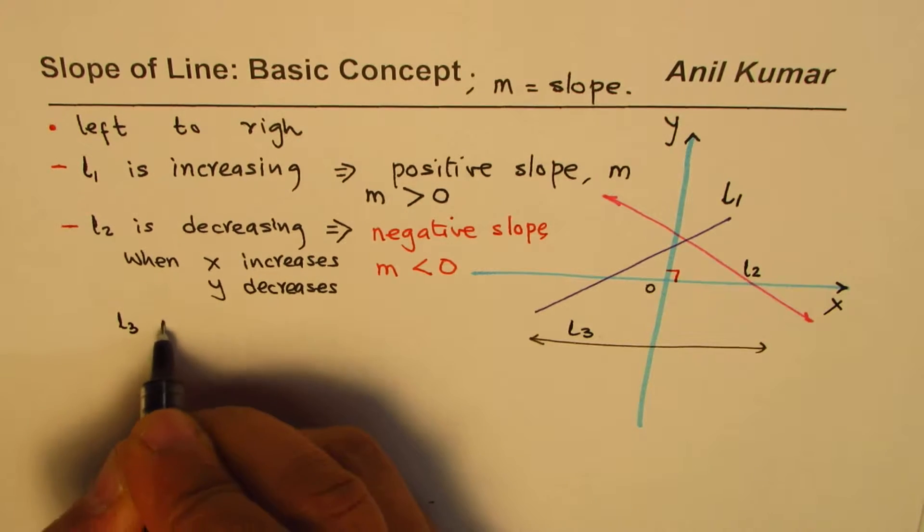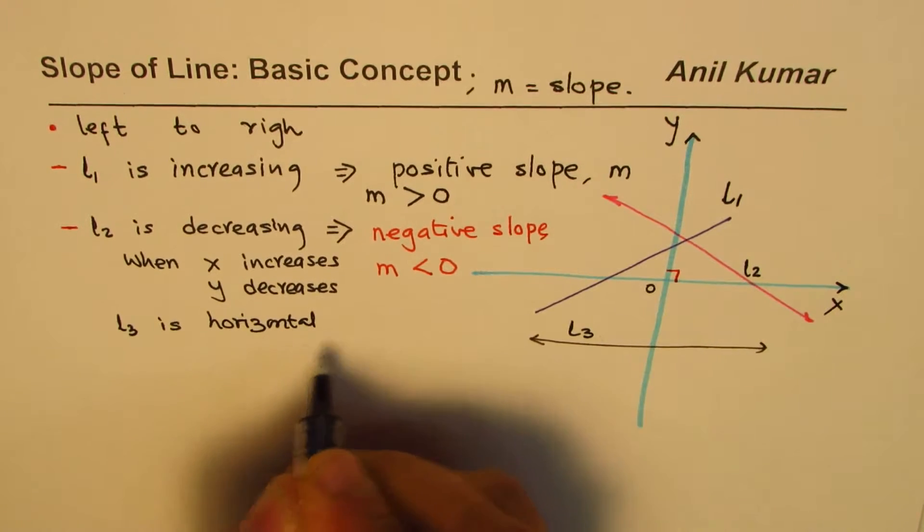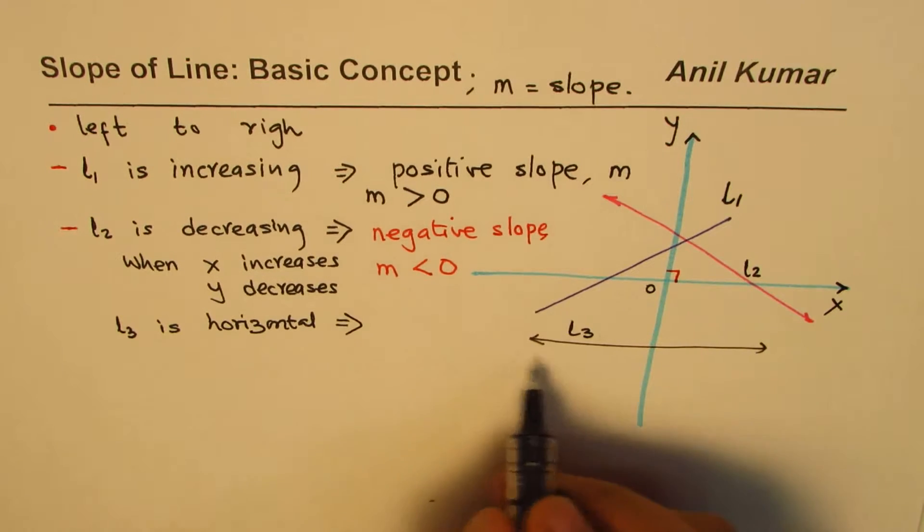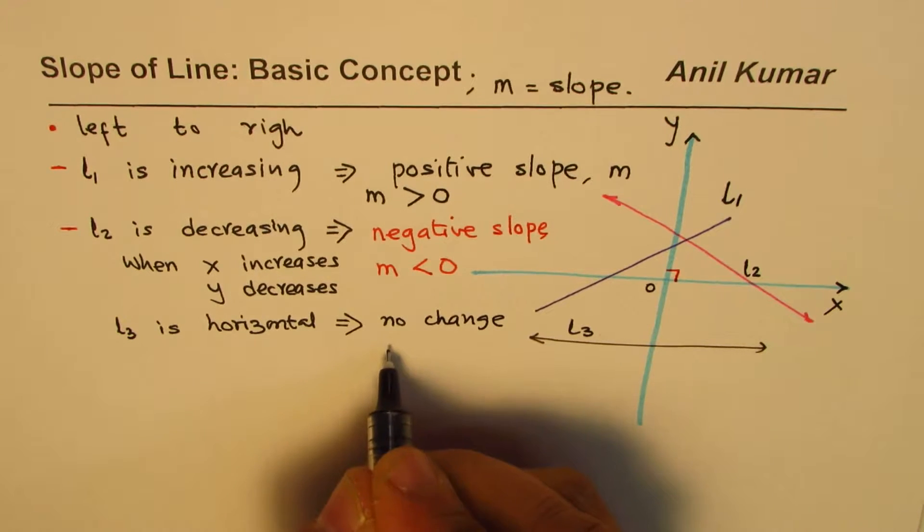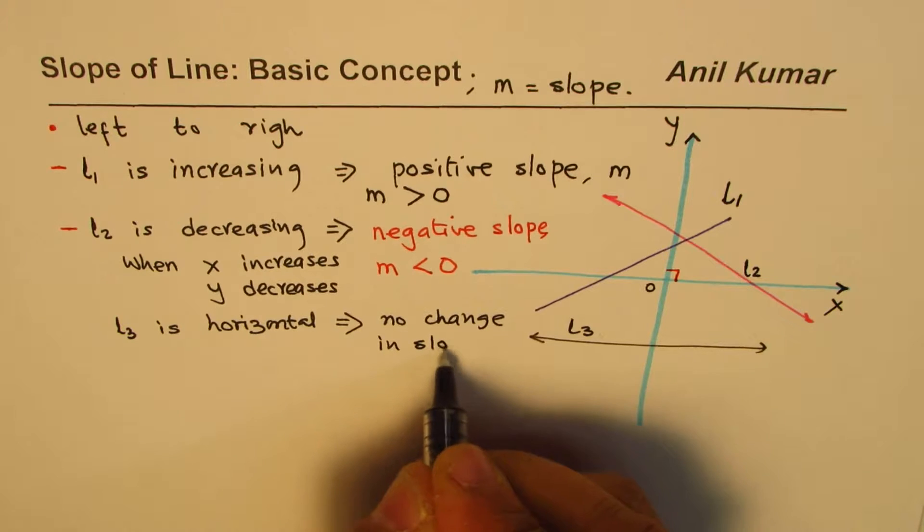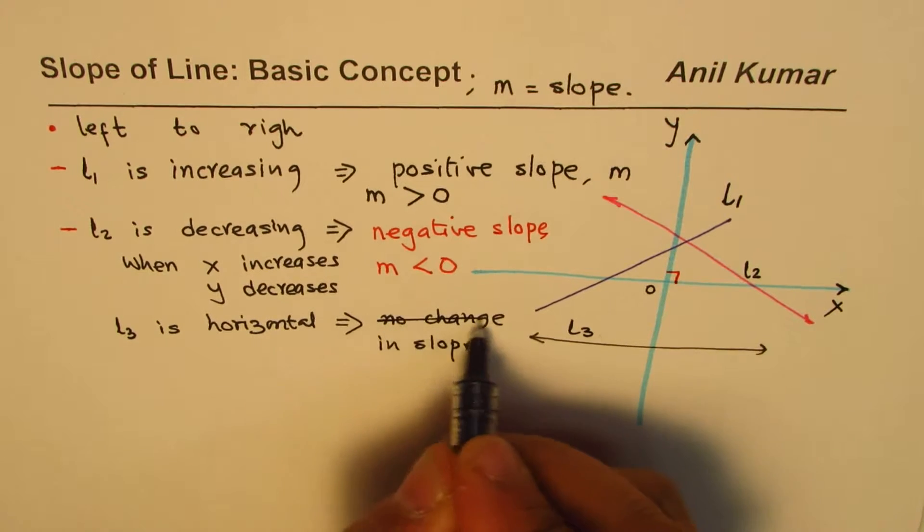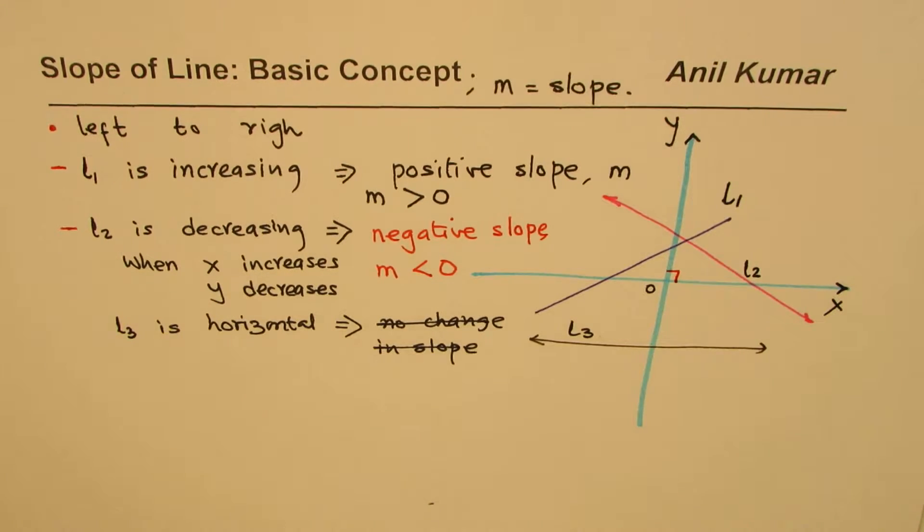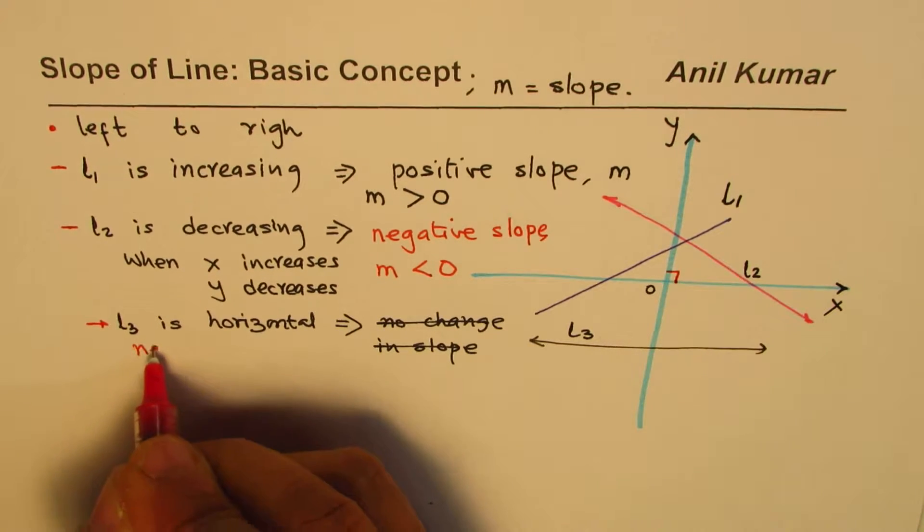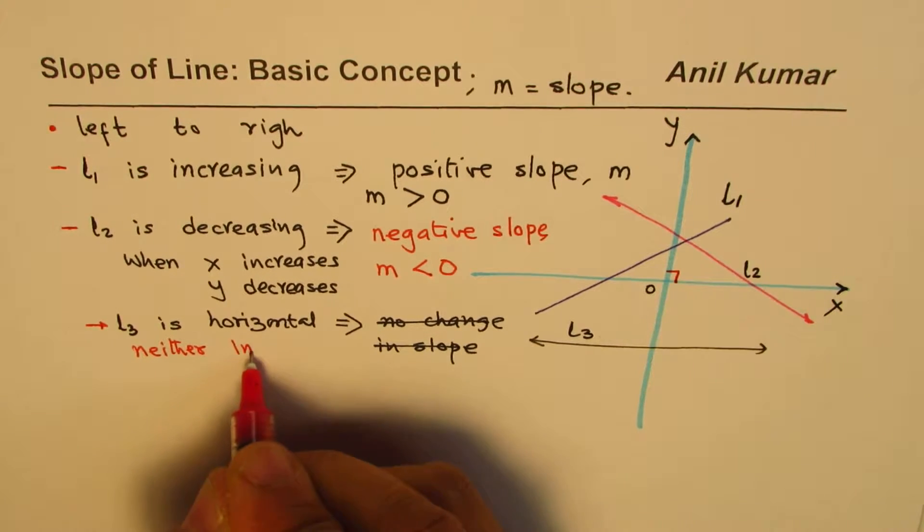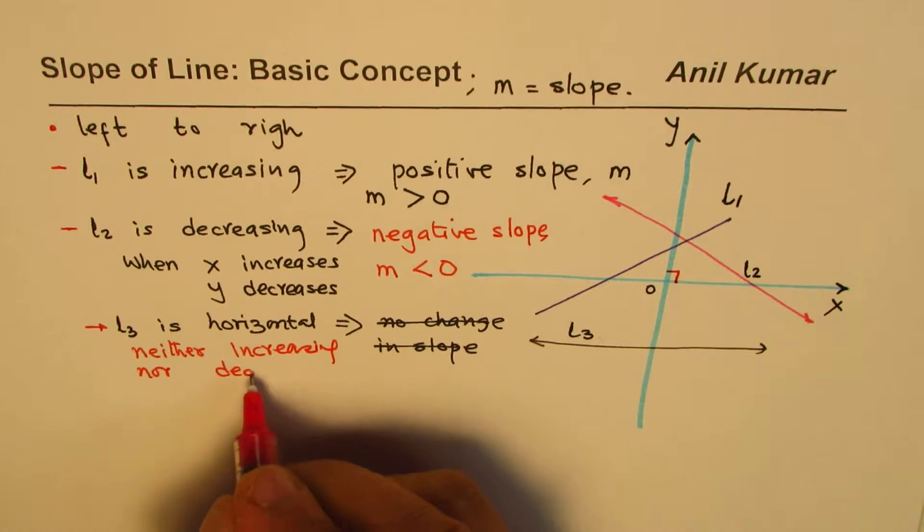Line 3 is horizontal line. In case of horizontal line, there is no change. No change in slope. I should not say that. I should say it is neither increasing. This is wrong. Sorry for that.